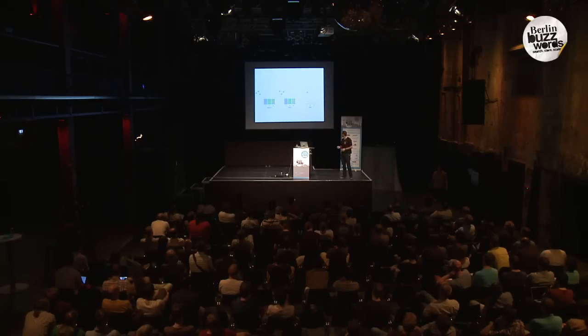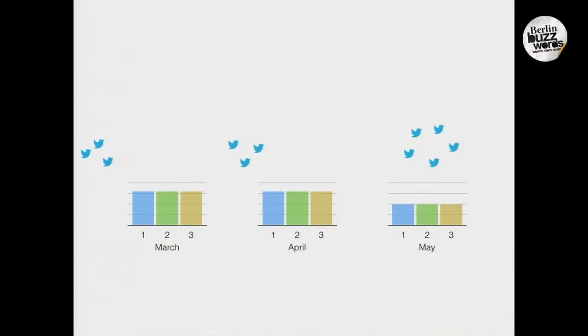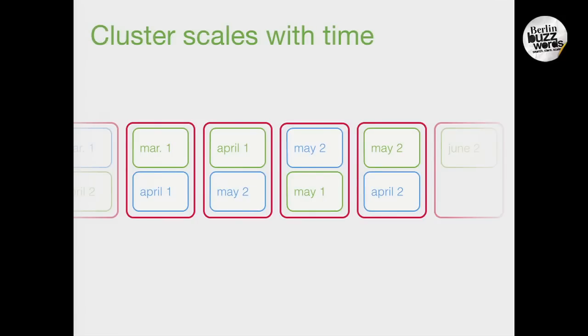The ideal approach is a model that scales with your data. We take data from March and put it in one index. As we flow to the next month, we create another index — a new space for the data — and so forth. One index per time period. Every time we go to a new month, we allocate a new bucket. That gives us a solution that scales with time. As the data grows, so does the cluster.